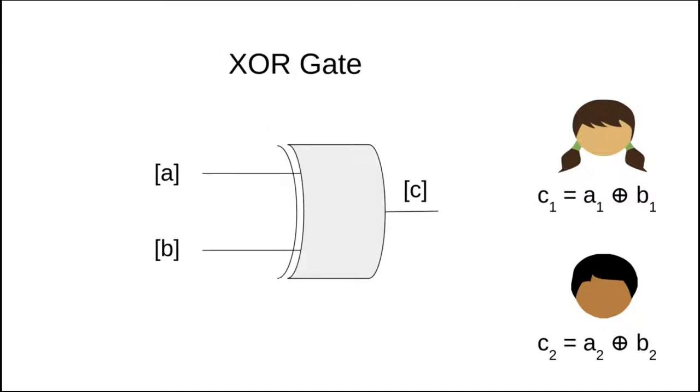I will now demonstrate how each gate is evaluated. XOR gates are free and are evaluated locally, that is, without interaction. Alice and Bob simply add their share of A and B. For example, Alice computes her share of C, C1, by adding A1 XOR B1.